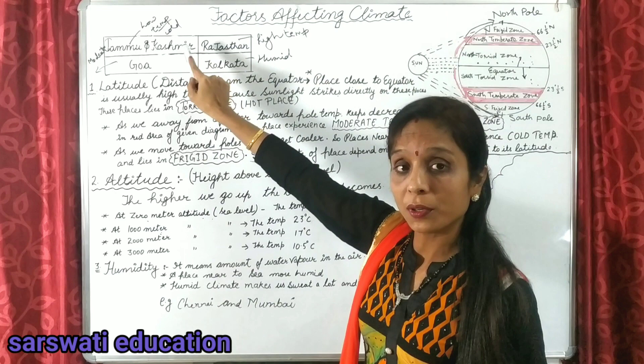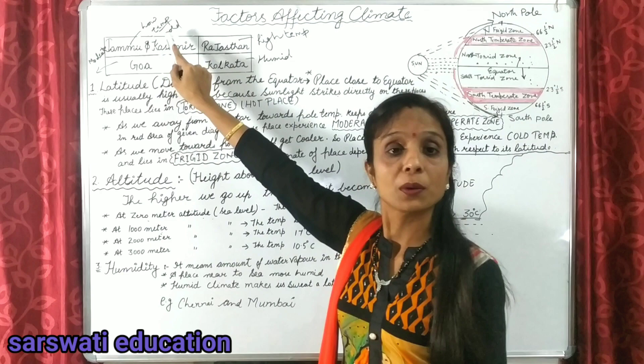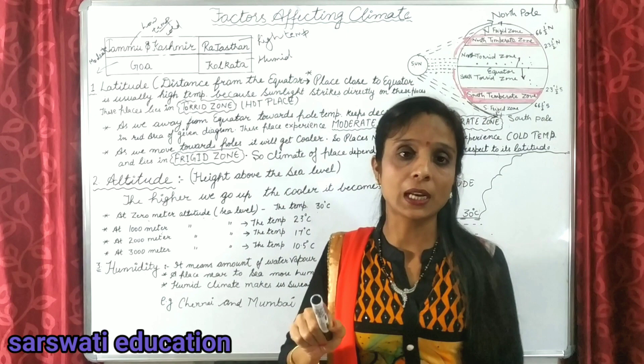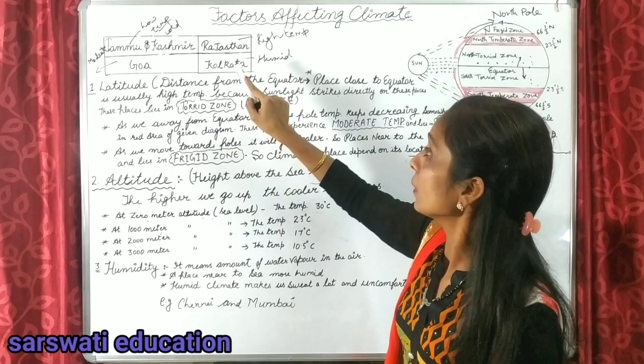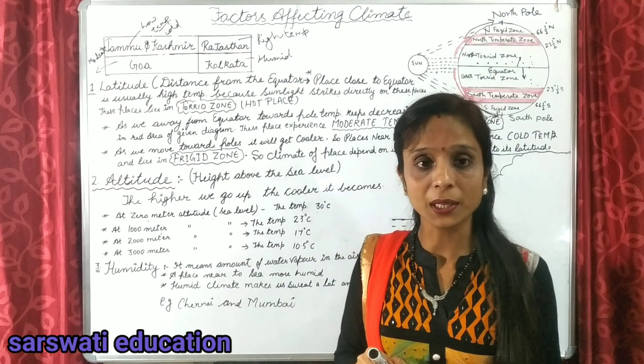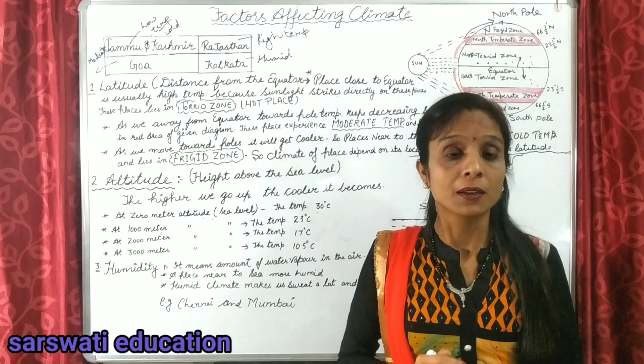These four states of India have different climates. Jammu and Kashmir has cold climate with low temperature. Rajasthan has high temperature and hot climate. Goa has a very pleasant, moderate climate — not too high and not too cold. And Kolkata has a very humid temperature with high humidity.